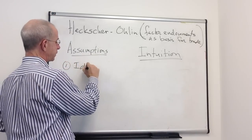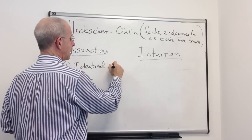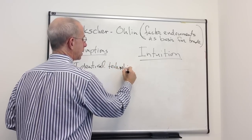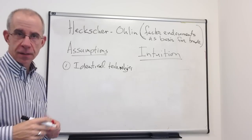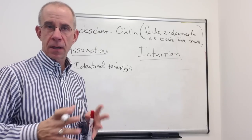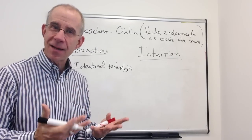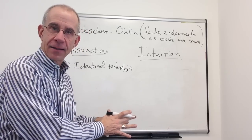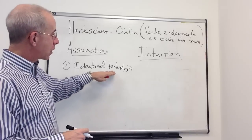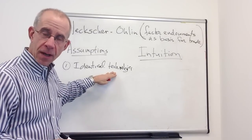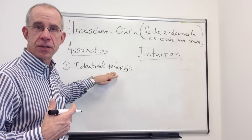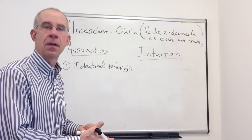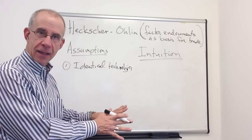The first assumption is that the two countries share the same technologies — identical technologies in the countries that are trading. That's not meant to be realistic. It's designed to eliminate technology differences as a basis for trade. From the Ricardian model, we've already shown that differences in technologies are a basis for trade, so we don't need that as an additional complication in the Heckscher-Ohlin model. We can set that aside.